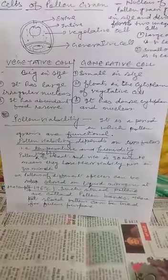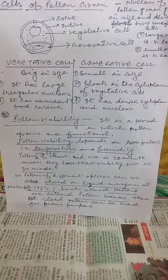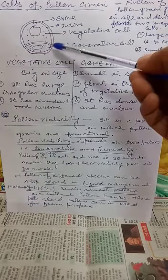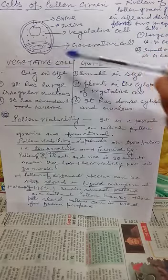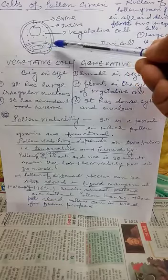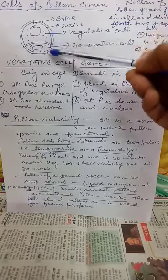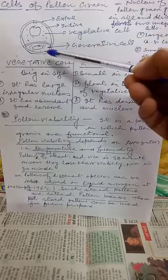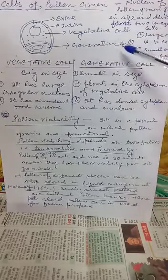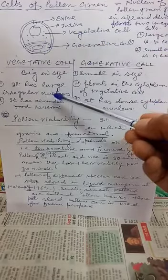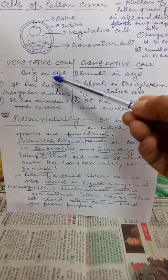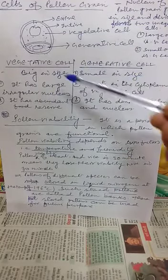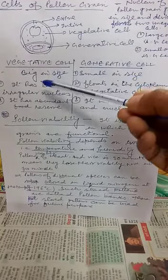Now we will study the cells of pollen grain. When the nucleus of the pollen grain grows in size and divides, it forms two unequal cells. As you can see in the diagram, the pollen grain consists of two cells: the large one is called the vegetative cell and the smaller one is called the generative cell.